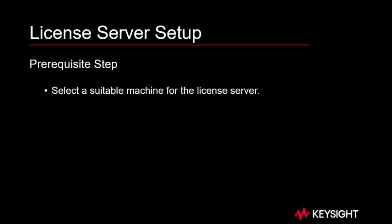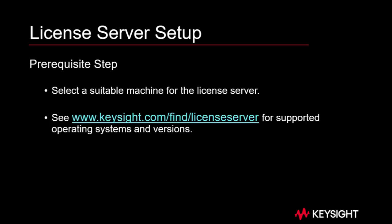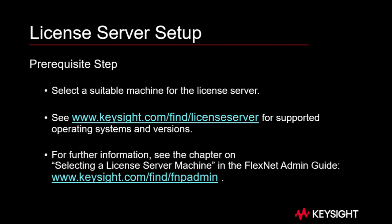Prerequisite step: select a suitable machine for the license server. See keysight.com/find/licenseserver for supported operating systems and versions. For further information, see the chapter on Selecting a License Server Machine in the FlexNet Admin Guide at keysight.com/find/FNPadmin.